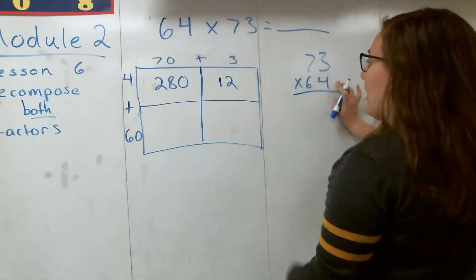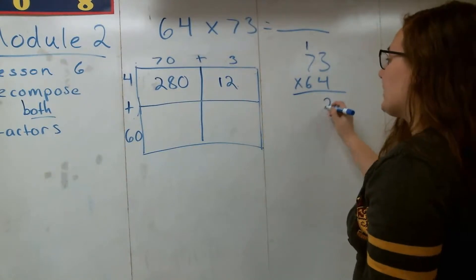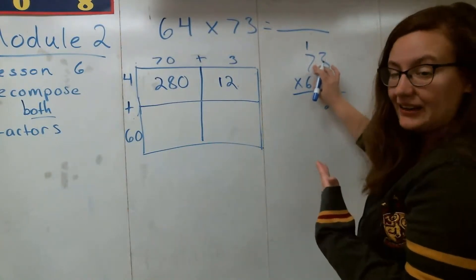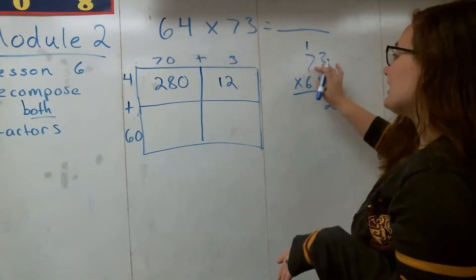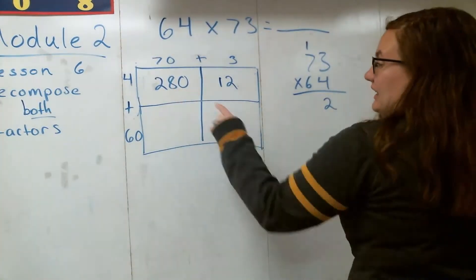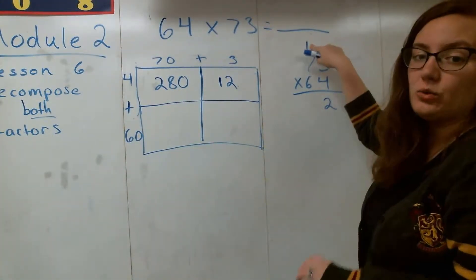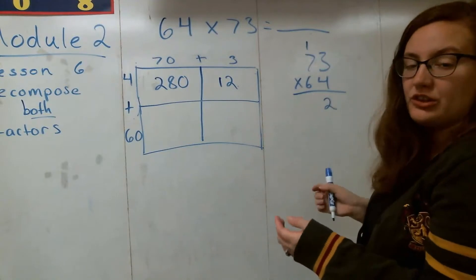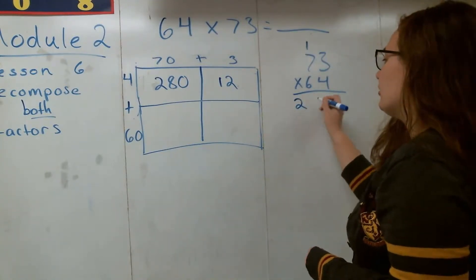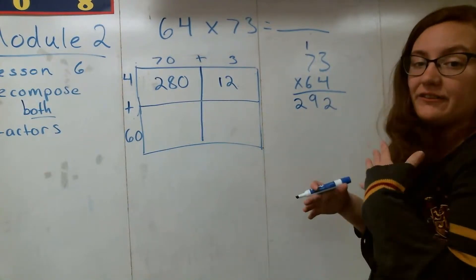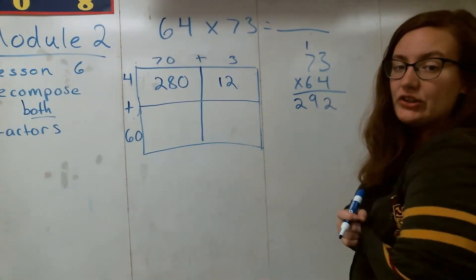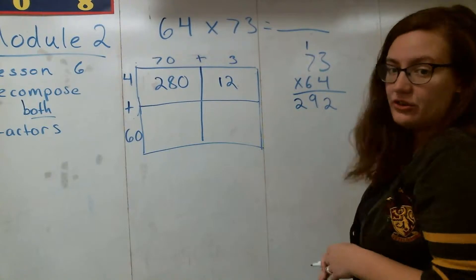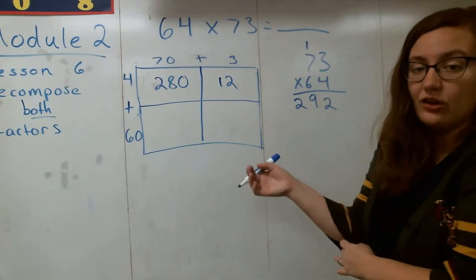Just like on my area model, I'm going to do 3 times 4, that gives me 12, so I carry that 1 and leave the 2. Then I do 4 times 70 — technically 4 times 7 — which also gives me 280. But notice up here I have this 1 that has been carried up to the tens place, so I have 280 plus 10, which gives me 290. So I write 29 right here. You can also just think of this as 4 times 7 which is 28, then add 1 to get 29.